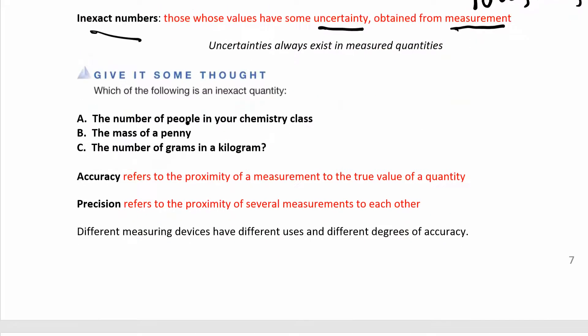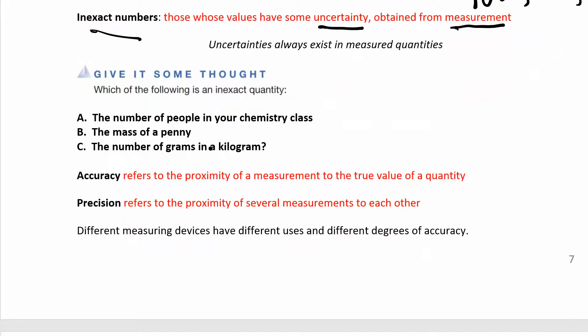Let's do a quick one. Are these exact or inexact numbers? The number of people in your chemistry class — you can count that, so that's exact. The mass of a penny — this is a measurement, so it's an inexact number. And the number of grams in a kilogram — that's an exact number as well, because there are exactly 1,000 grams in a kilogram.